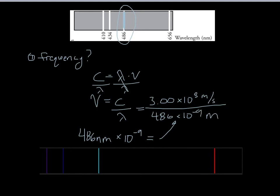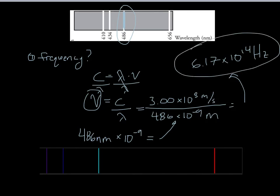Go ahead and type this into your calculator and make sure you get the same answer — type it in a couple times just to make sure it matches up. What you should get is 6.17 times 10 to the 14th — that's 617 with 12 zeros behind it, a very large number. Since it's frequency, the units are hertz. Always put units on your numbers. So there's our final answer: 486 nanometers wavelength corresponds to a frequency of 6.17 times 10 to the 14th hertz.